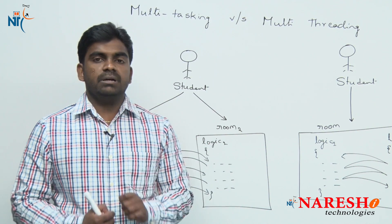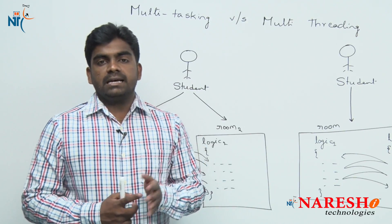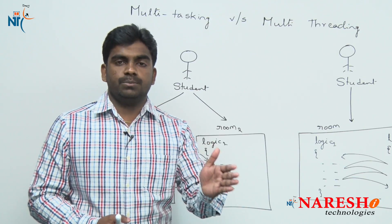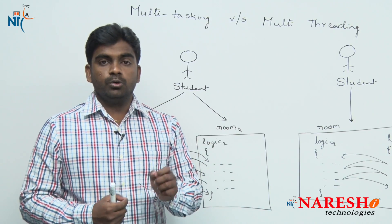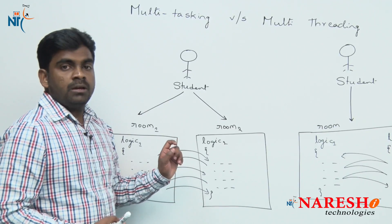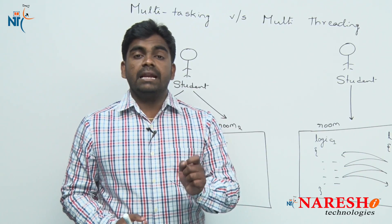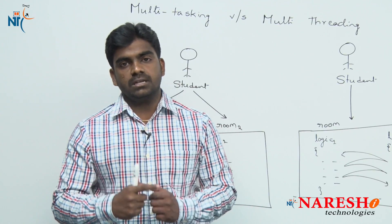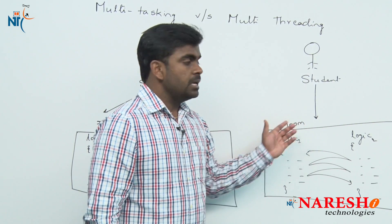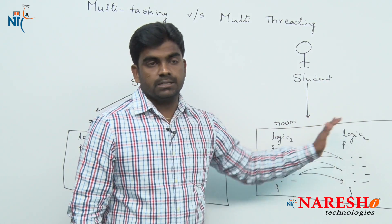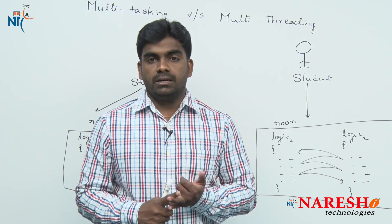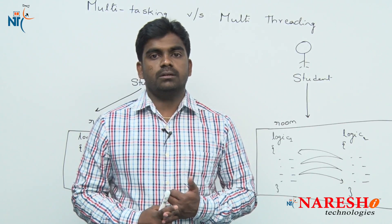This is a simple example. In terms of definitions: multitasking means performing n number of tasks using n number of process spaces — n rooms required for n tasks. Multithreading means performing n number of tasks using only one process space — in a single room, a single process space, we can execute n number of threads. This is the main difference between multitasking and multithreading. Hope you understood well, thank you all.